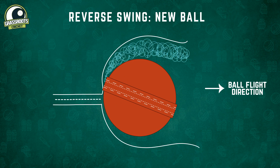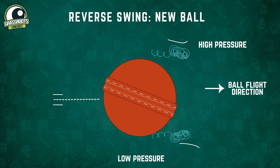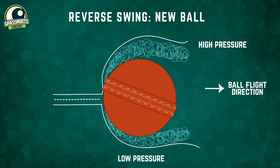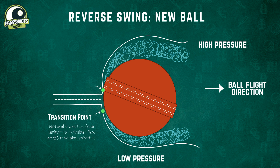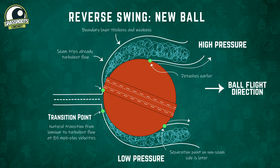At a certain delivery velocity, the laminar boundary layer naturally transitions into a turbulent one and leads to a decreased net force. When a new ball is bowled at a speed higher than 85 miles per hour, this transition point moves back and the laminar flow transitions to turbulent before encountering the seam. When the seam trips the flow, the boundary layer is thickened. The seam side boundary layer has an earlier separation point because a thick boundary layer is generally weaker than usual. This asymmetry is opposite to the one we see in conventional swing and the net force acts in the direction opposite to the seam in this case.